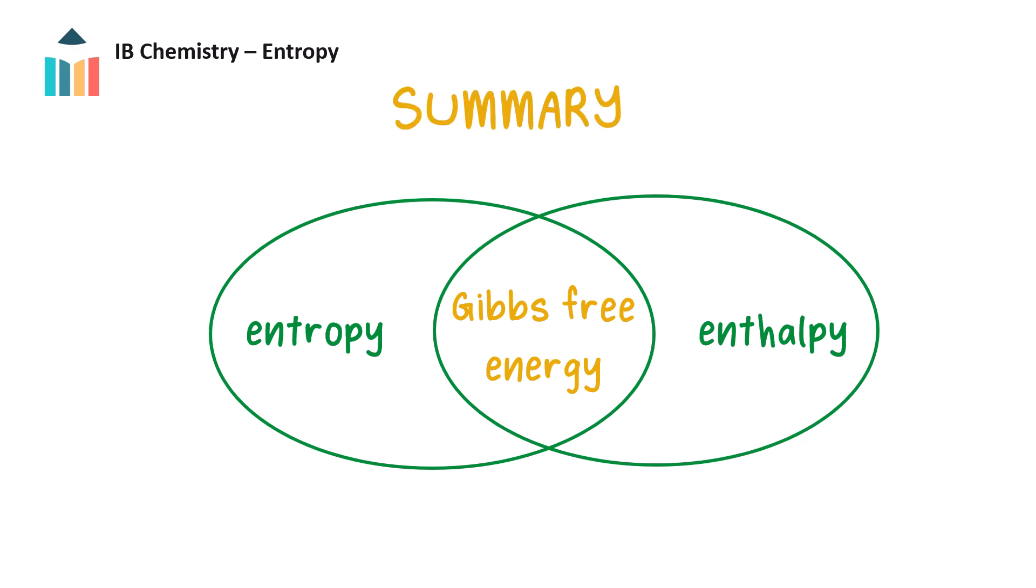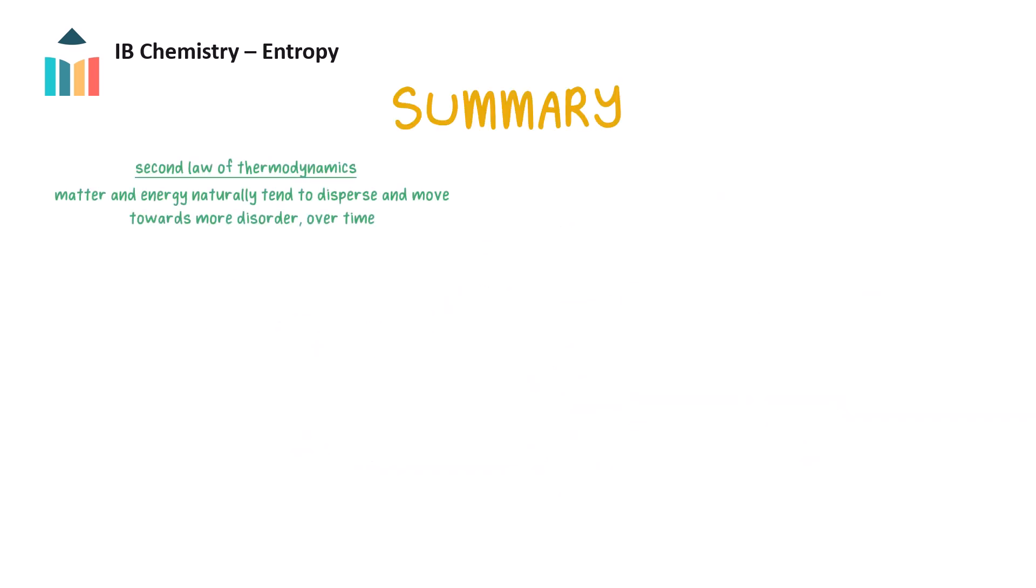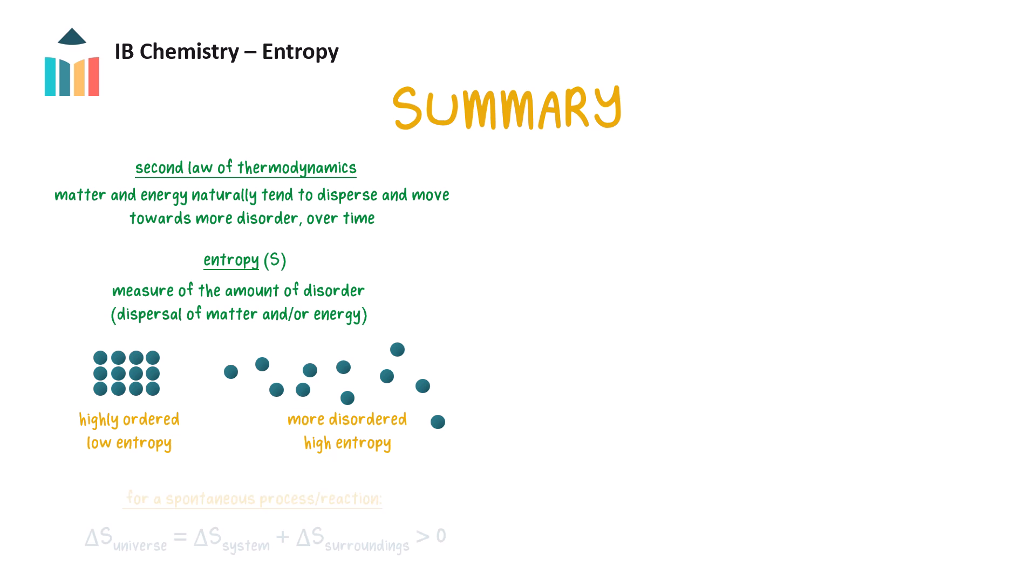Now, let's summarize the key points. We learned that the second law of thermodynamics says that matter and energy naturally tend to disperse and move towards more disorder over time. The measure of disorder or dispersal of matter and/or energy is called entropy. The more ways matter and/or energy can be distributed, the higher is the entropy. Spontaneous changes are accompanied by an increase in the total entropy of the universe.